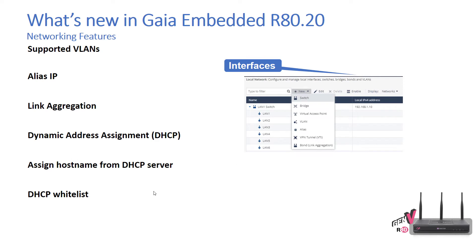From the networking perspective we support 100 VLANs, alias IPs so we can associate more than one IP address to the same network interface. Link aggregation is supported for aggregating or bonding of multiple network connections, enabling you to join two or more interfaces together to improve performance and redundancy, thus increasing the network throughput and bandwidth.